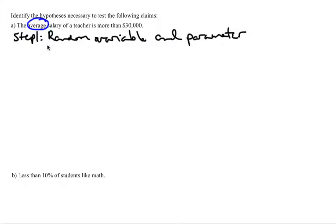The random variable would be what you measured. You can't measure an average. An average is something you calculate in most cases. Normally we don't measure averages. Normally we measure something else. In this case we're measuring the salary of a teacher. So our random variable is the salary of a teacher.